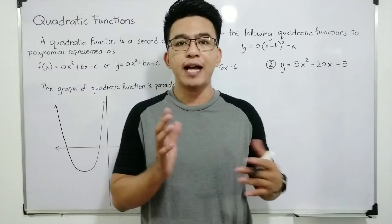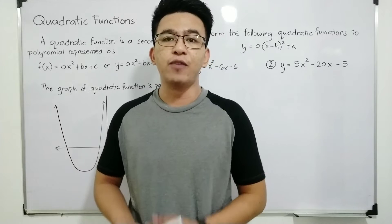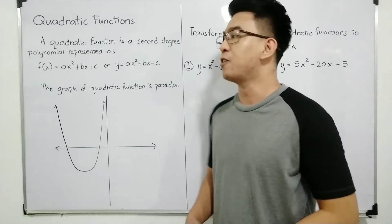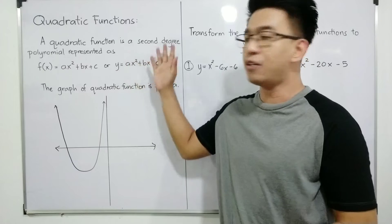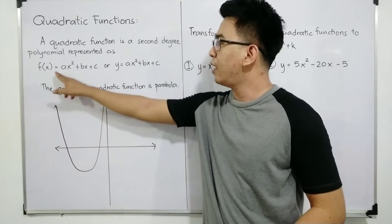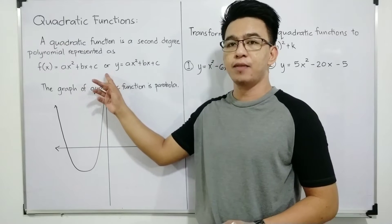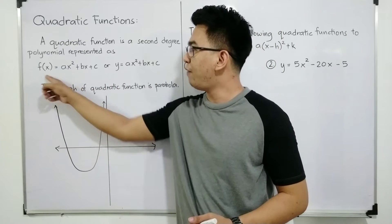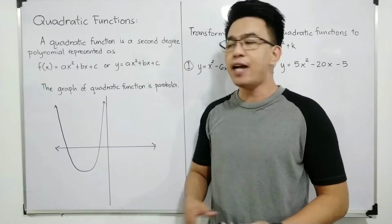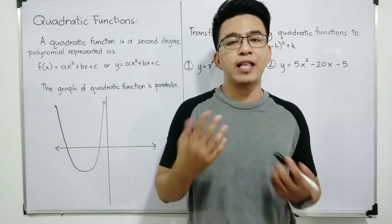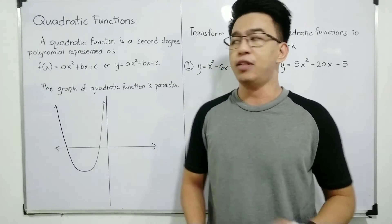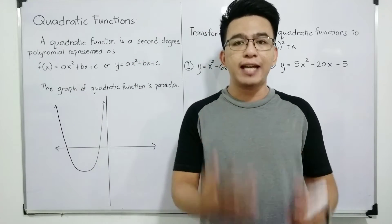In the reading topic, this is the next one after solving quadratic inequalities. So without further ado, let's do this topic. A quadratic function is a second degree polynomial represented as f of x, using our function notation, is equal to ax squared plus bx plus c, or we can also express this f of x as y. So another form is y is equal to ax squared plus bx plus c. Note that f of x is equal to y, and when it comes to functions, we have variable x and variable y as your input and output. When I say quadratic function, it is a second degree polynomial.